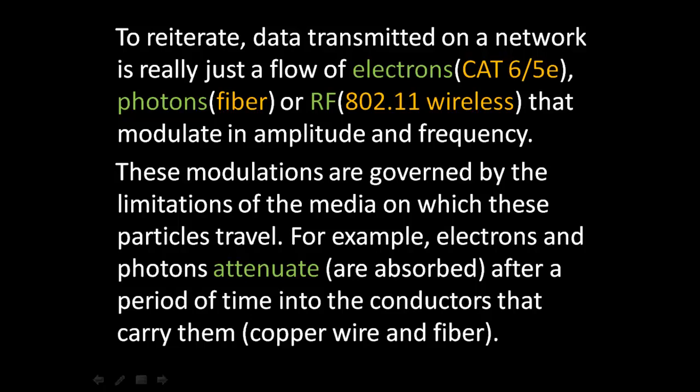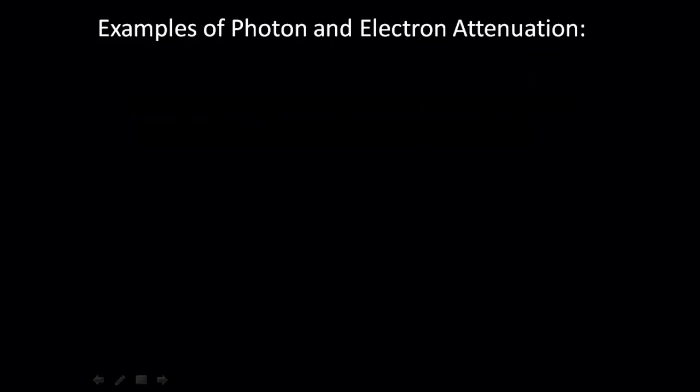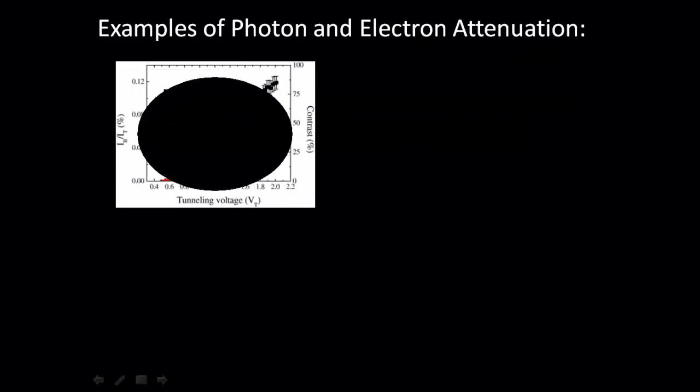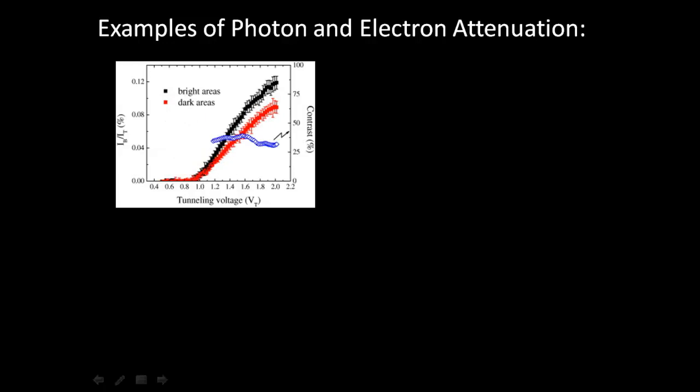For example, electrons and photons attenuate — that is, they are absorbed — after a period of time into the conductors that carry them, such as copperware or fiber. Here are some examples of photon and electron attenuation.